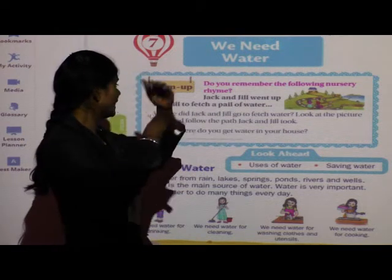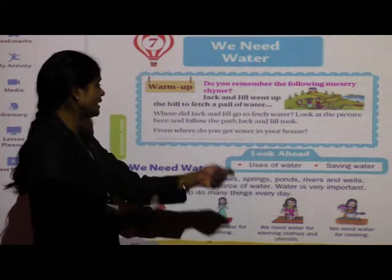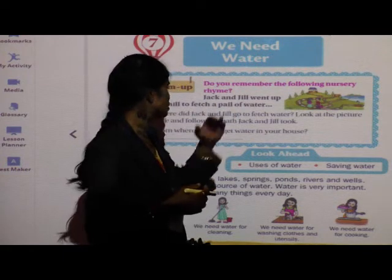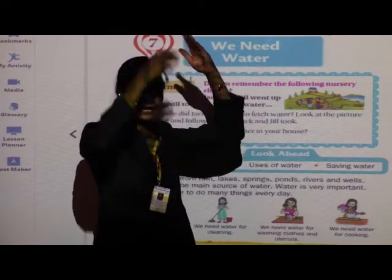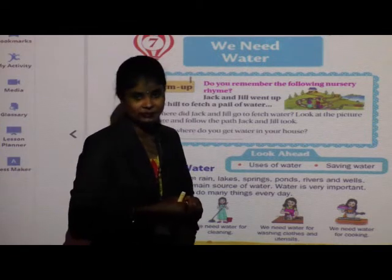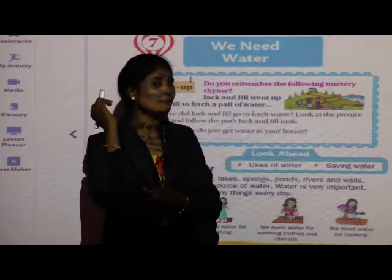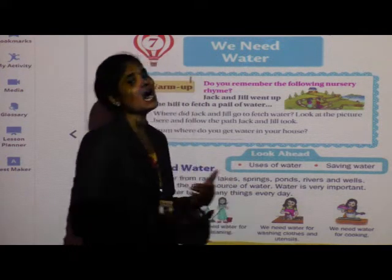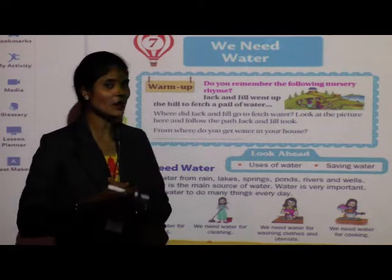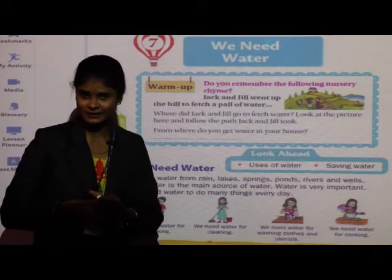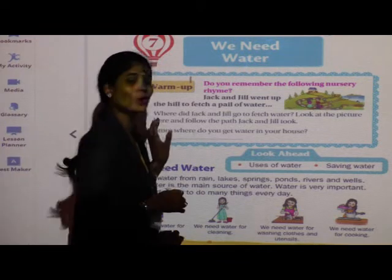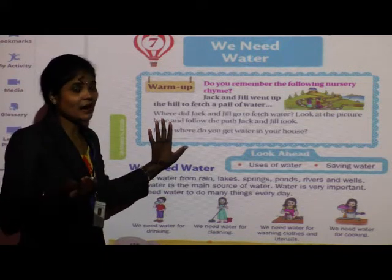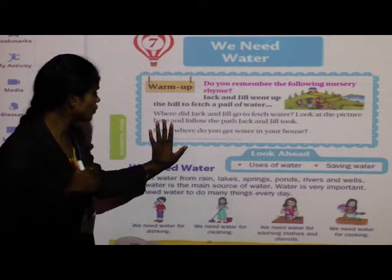Jack and Jill went up the hill to fetch a pail of water. Do you remember the next line? Jack fell down and broke his crown, and Jill came tumbling after. This is the rhyme you learned in nursery. Who went up the hill? Jack and Jill. Why? To fetch a pail of water.